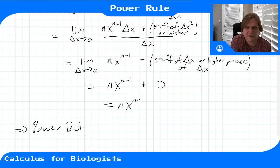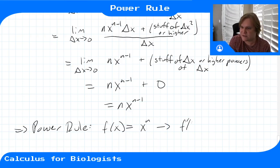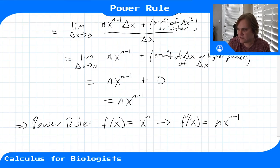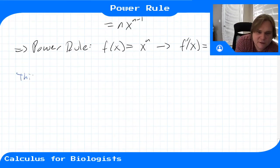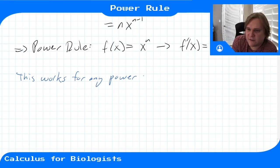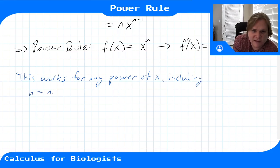This is our proof of the power rule, which says that f of x equals x to the n implies f prime of x is equal to n times x to the n minus 1 — you bring the power down, then subtract 1 from the power. This works for any power, not just integers. The proof for non-integers is more difficult, but you can apply this to any power of x, including negative numbers and fractions.